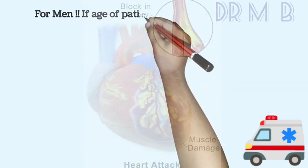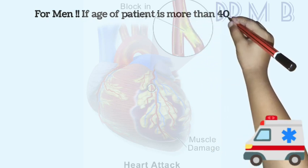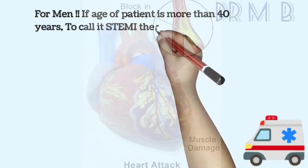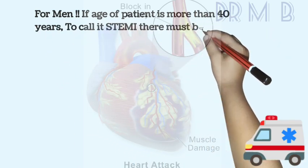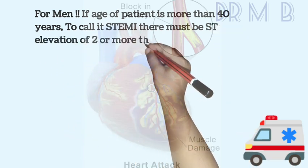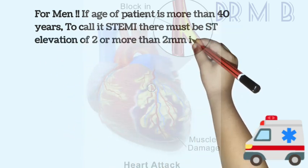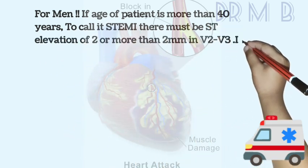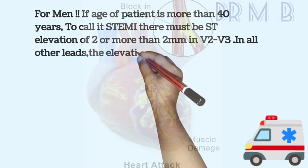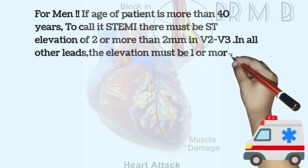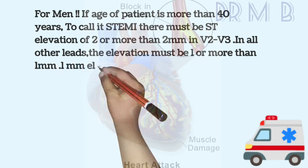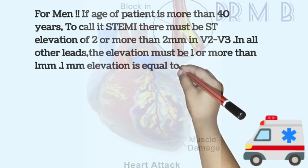For men, if the age of the patient is more than 40 years, to call it ST elevation MI there must be ST elevation of 2mm or more in V2 to V3. In all other leads, the elevation must be 1mm or more than 1mm.